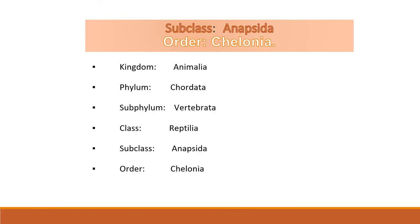Order Chelonia includes turtles and tortoises. The marine forms are commonly called turtles, while the freshwater ones are called terrapins, and the terrestrial forms are called tortoises. An example for a marine turtle is Chelonia mydas, the green turtle. An example for a freshwater terrapin is Trionyx, while Testudo is the terrestrial tortoise.